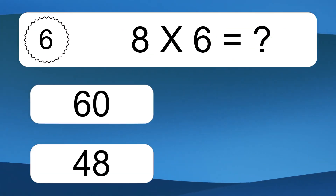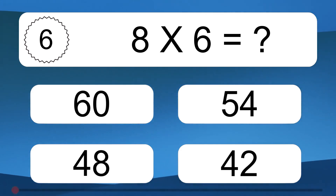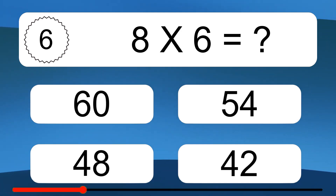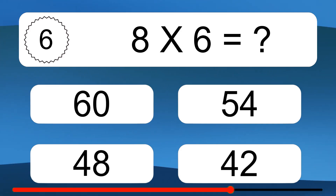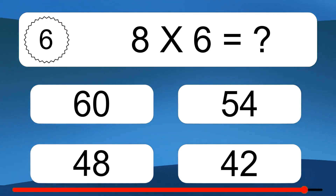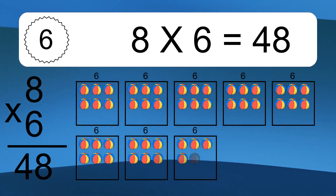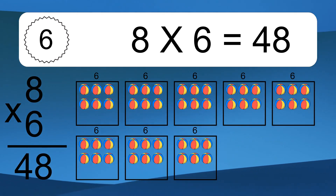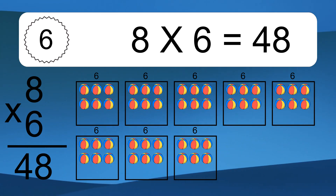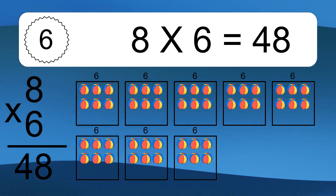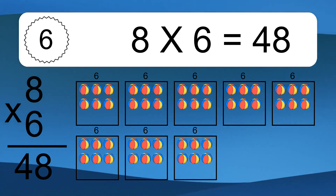8 times 6 equals what? We have 8 boxes, and each box has 6 colorful balls inside. If you count all the balls in all the boxes together, you will have 8 times 6 balls. This equals 48 balls.